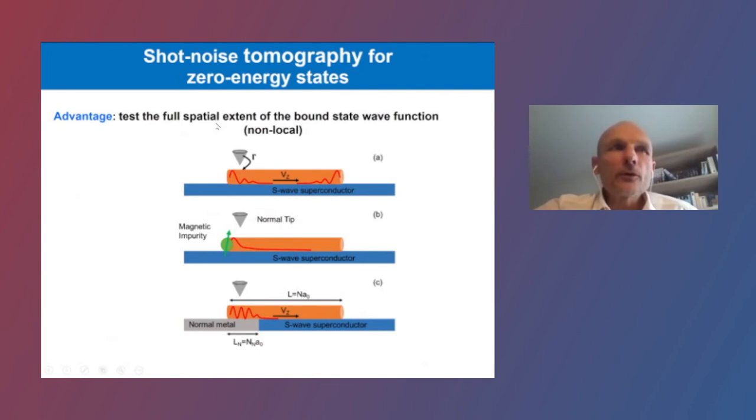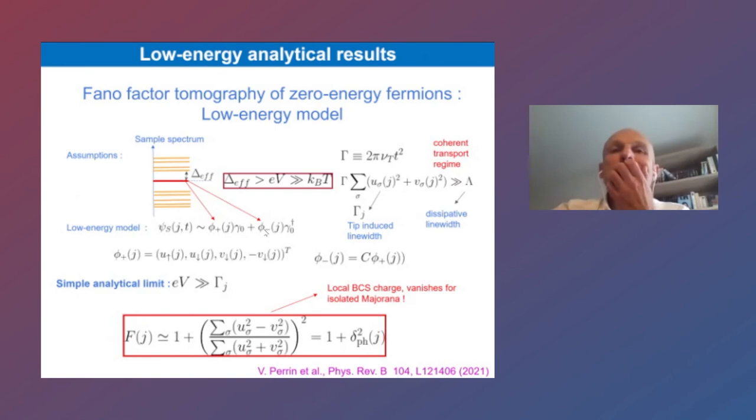We have considered several situations in order to discriminate Majorana bound states from fake Majoranas, which could be, for example, a Shiba bound state at zero energy, an Andreev bound state at zero energy, or a quasi-Majorana. In all the situations that we will be considering, they will be characterized in the conductance by zero bias peaks. I want to see whether noise is able to discriminate, to sort these zero bias peaks. I will make a few assumptions. I will assume that I'm considering a voltage less than the effective gap and larger than temperature. And typically, I will assume that hybridization is larger than the intrinsic lifetime.